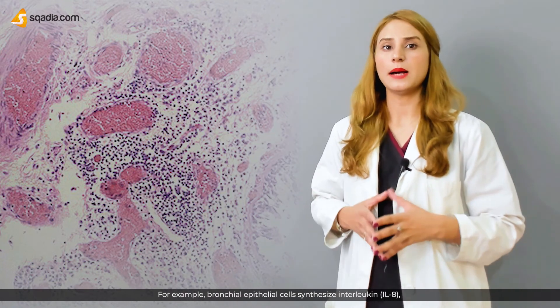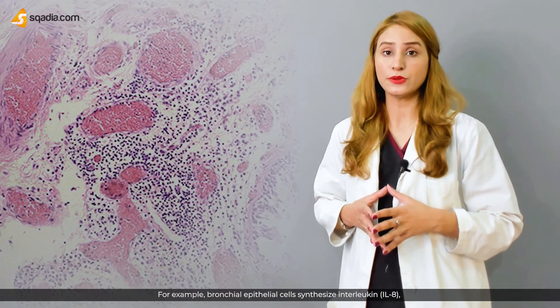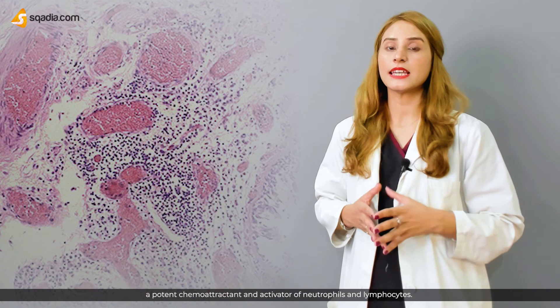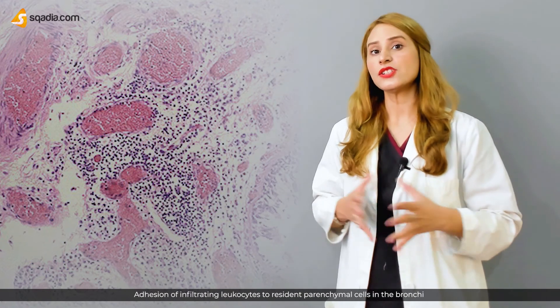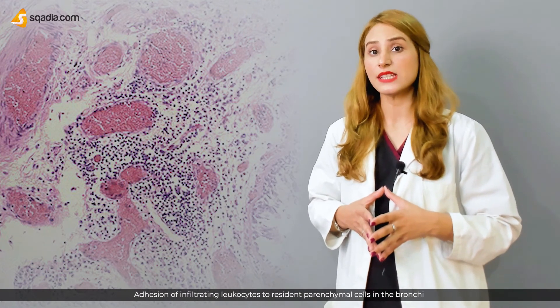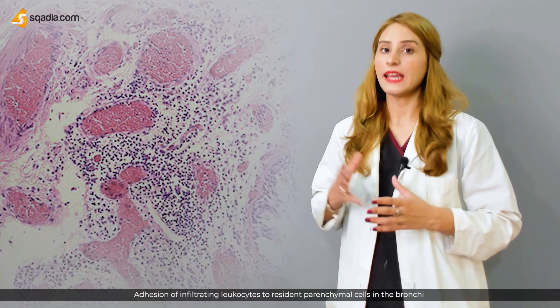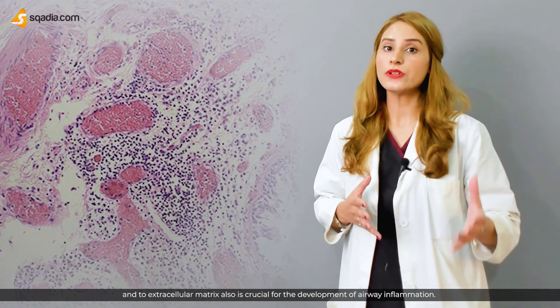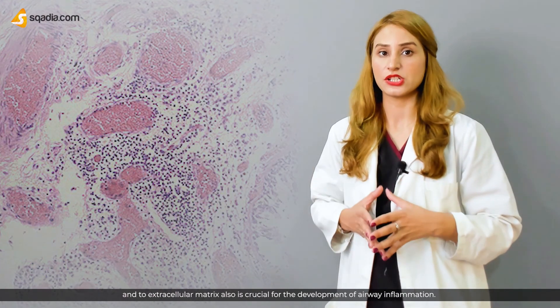For example, bronchial epithelial cells synthesize interleukin-8, a potent chemoattractant and activator of neutrophils and lymphocytes. Adhesion of infiltrating leukocytes to resident parenchymal cells in the bronchi and to the extracellular matrix is also crucial for the development of airway inflammation.